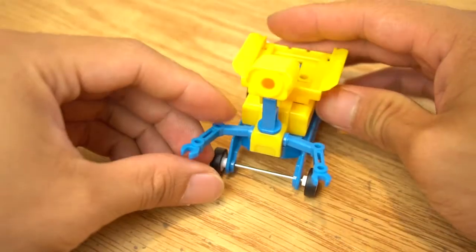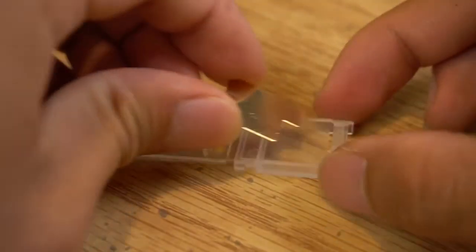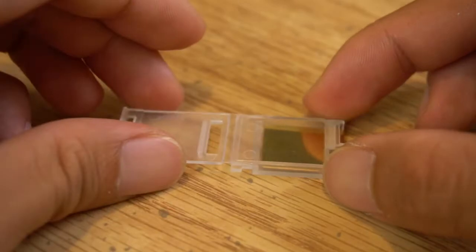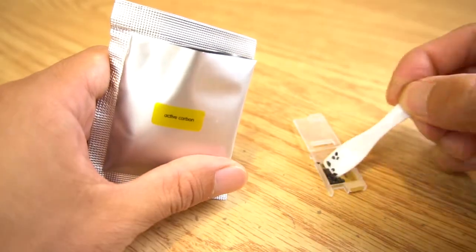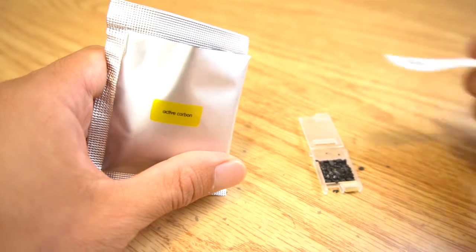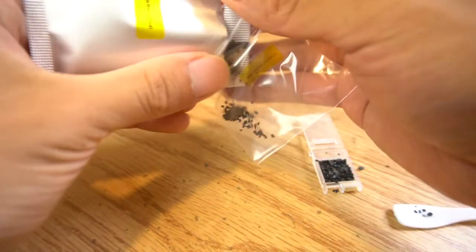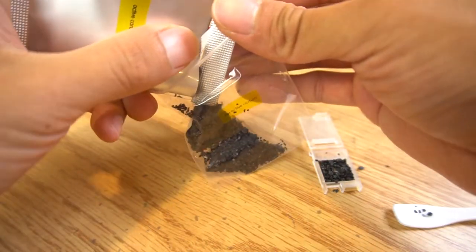Now we'll assemble the salt water battery. Take one of the battery cases and place a copper plate in the bottom. Then open the bag of activated carbon and scoop out enough to just fill the cavity without overflowing. You can pour the rest of the activated carbon into the empty zip-top bag and remove the air before sealing it to keep it fresh.